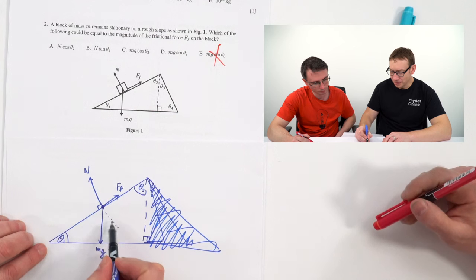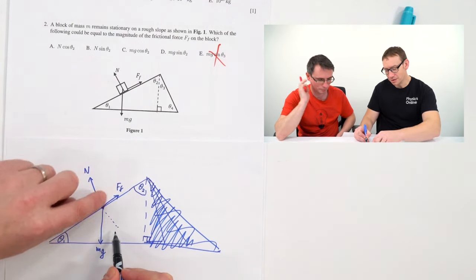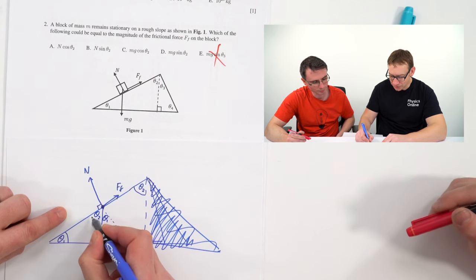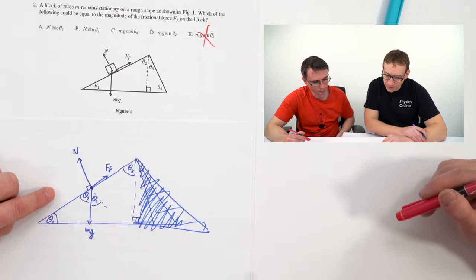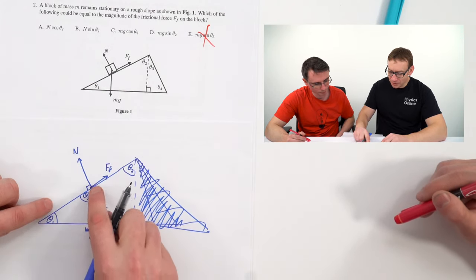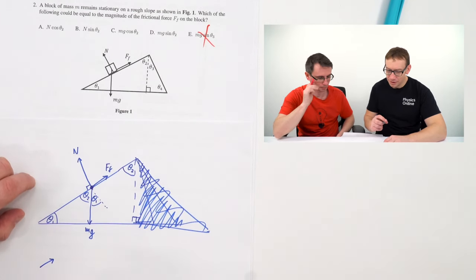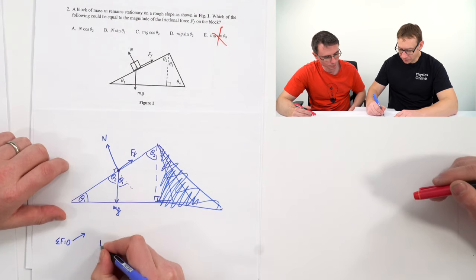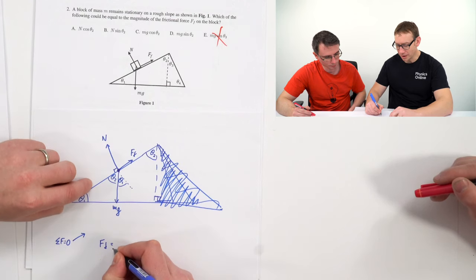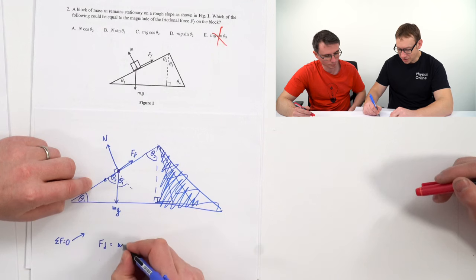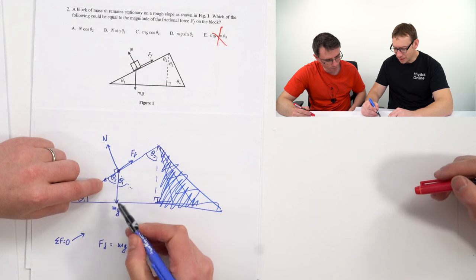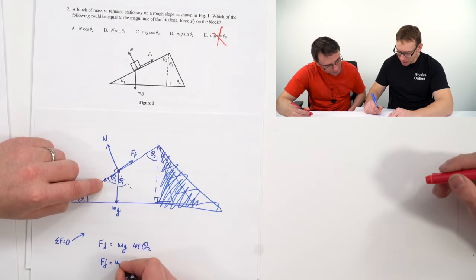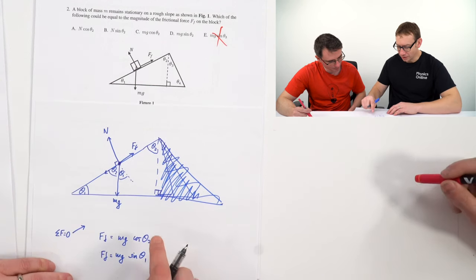Thinking about the component of weight perpendicular to the slope: if theta 1 is the slope angle, then this angle here is theta 1 as well, and this angle here is theta 2. Which of the following can be equal to the magnitude of the frictional force on the block? If we think about the forces perpendicular to the slope — it's stationary on a rough surface — the sum of forces is zero. So the frictional force up the slope equals the component of weight acting down the slope, which is mg cos theta 2 or mg sin theta 1.